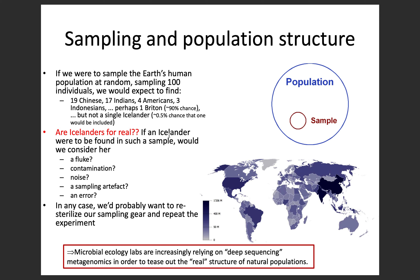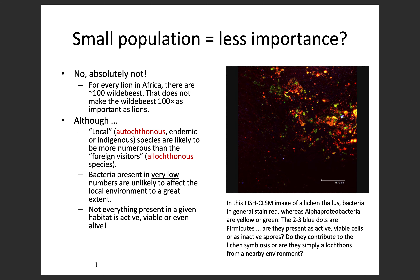When you find all these things, it's hard to know which ones are important. It's also hard to know whether a bacterium you found actually belongs there or just came in off your shoe - whether it's really part of the environment or just biological litter that landed there. The logic we use is like the example that for every lion in Africa there are around 100 wildebeest - that doesn't make the wildebeest a hundred times as important as lions. The two go together; you only need a few lions to balance the equation.